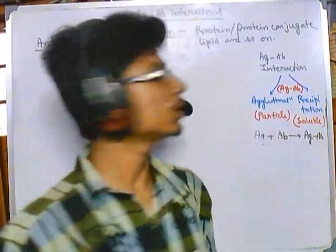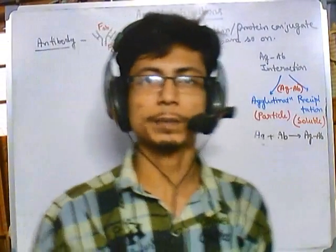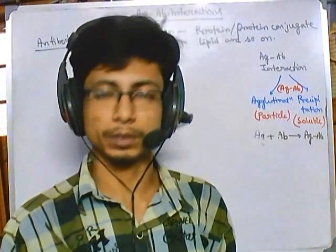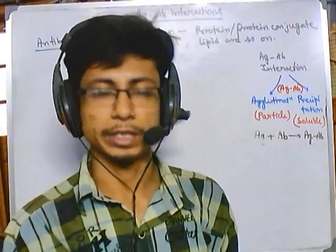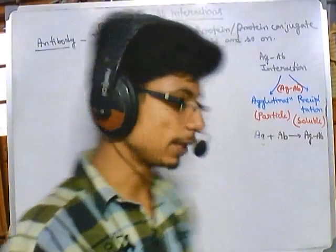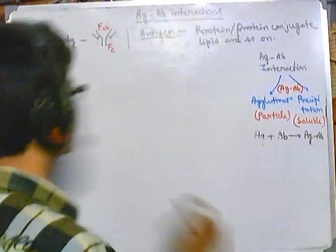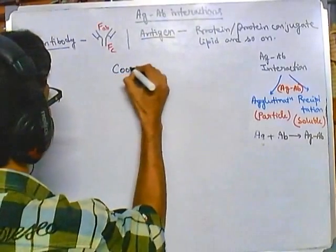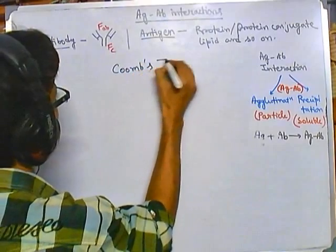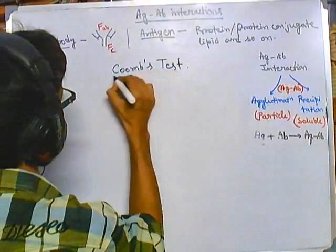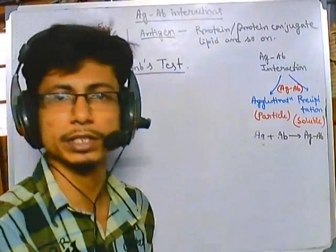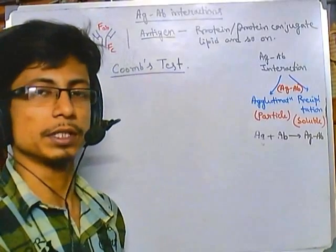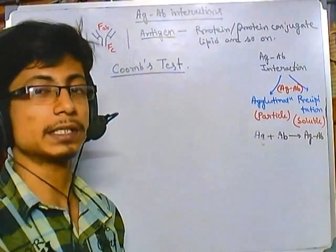Welcome back friends. We are talking about antigen-antibody interactions. We have talked about agglutination and hemagglutination processes, including active and passive types of hemagglutination. Now in this video we will be talking about another type of test called the Coombs test. This is a very important test because it is not a general kind of agglutination test — it is a different kind.